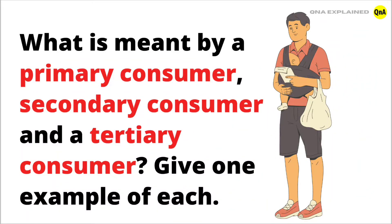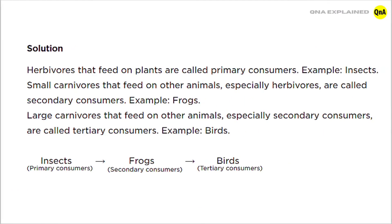What is meant by a primary consumer, secondary consumer, and a tertiary consumer? Give one example of each. Herbivores that feed on plants are called primary consumers.